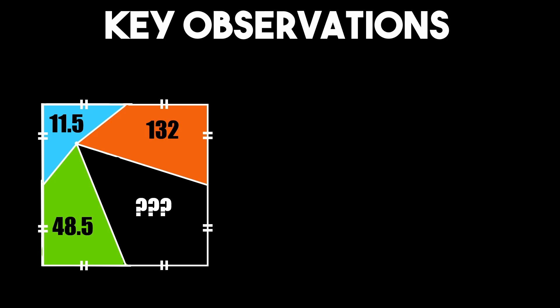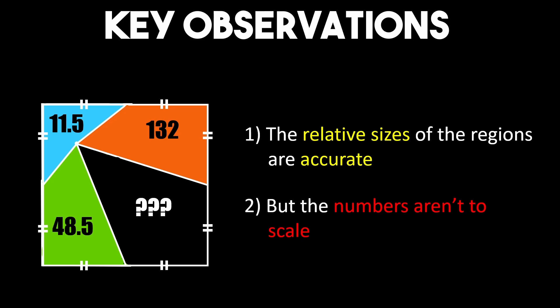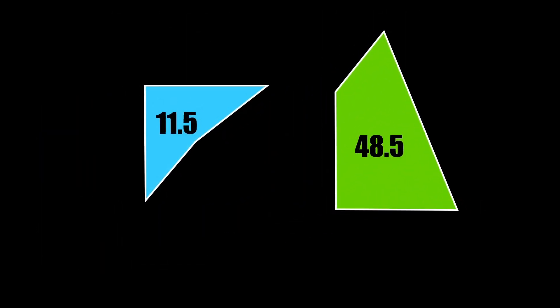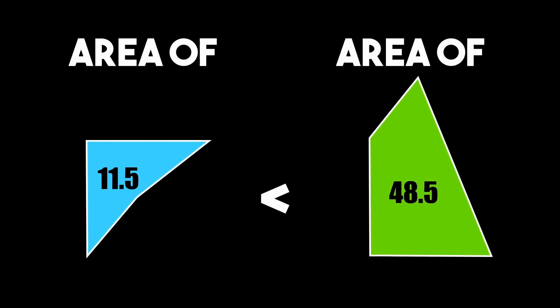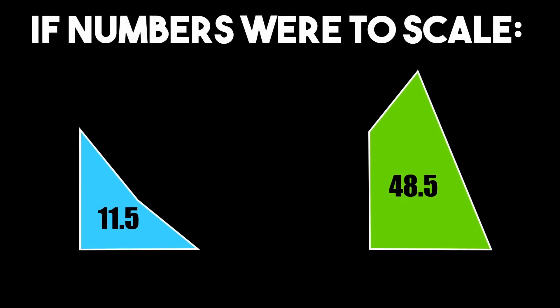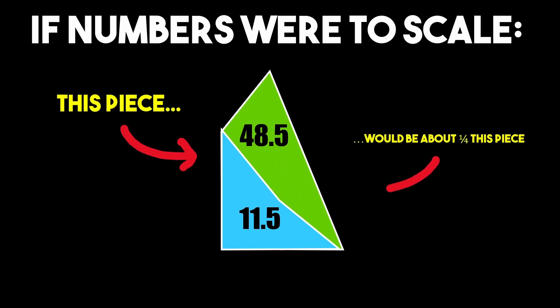The first two observations are that the relative sizes of the regions are accurate but they're not to scale. To illustrate let's take this top left piece and compare it to the bottom left one. It's clear that it's smaller than the bottom left one but the numbers don't quite match up because if they did the top left piece would only be around one-fourth the size of the bottom left piece.